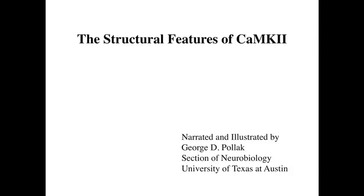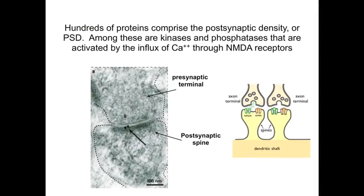In this movie, we're going to consider the structural features of CAM kinase 2. Before discussing the structure of CAM kinase 2 and why small and large calcium signals affect the kinase differently, I show here an electron micrograph of a synapse on a spine. Spines are the small protrusions on the dendrites of cortical and hippocampal cells, and are innervated by an axon terminal, as shown at the figure on the right.